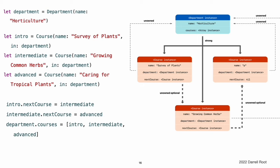Like non-optional unowned references, you are responsible for ensuring that next course always refers to a course that has not been deallocated. In this case, for example, when you delete a course from department.courses, you also need to remove any references to it that other courses might have. Note, the underlying type of an optional value is Optional, which is an enumeration in the Swift Standard Library. However, optionals are an exception to the rule that value types cannot be marked with unowned. The optional that wraps the class does not use reference counting, so you do not need to maintain a strong reference to the optional.